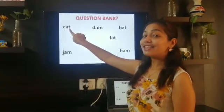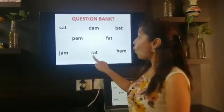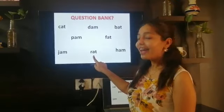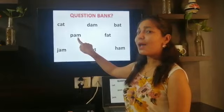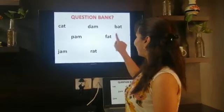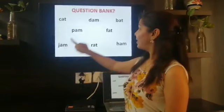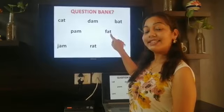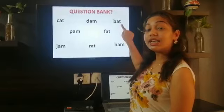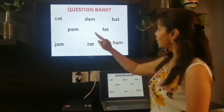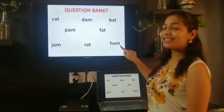This is cat. Now what is this? This is rat. Now what is this? This is Pam. Now what is this? This is jam. Now what is this? This is fat. And what is this? This is bat. And at last, which one is left? Now what is this? This is ham.